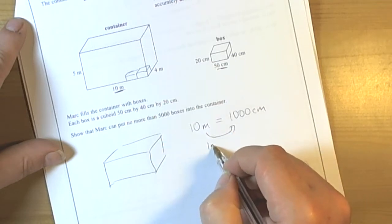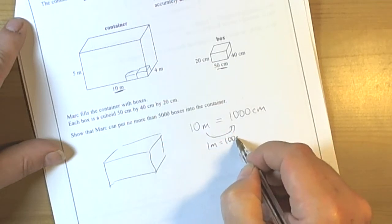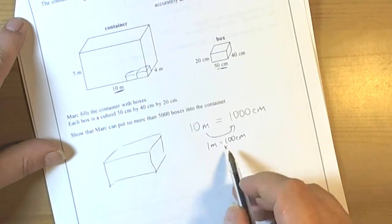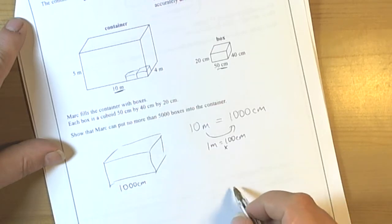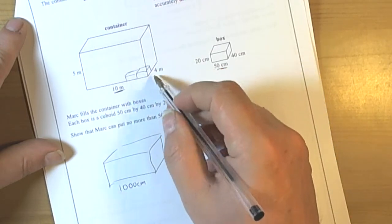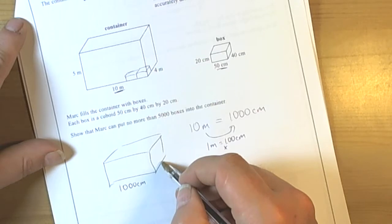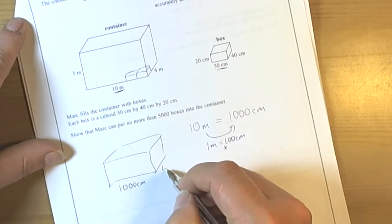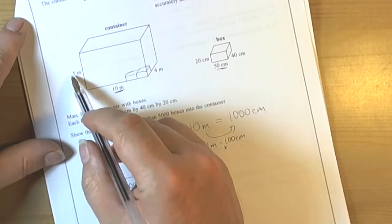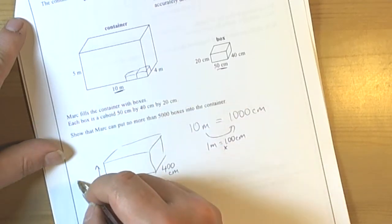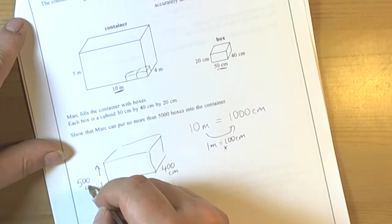The reason we know that is one meter is the same as a hundred centimeters, so we've timesed by one hundred. We do the same for the other dimensions. Four meters was the width, so four times a hundred is four hundred centimeters. And the height was originally five meters, five times a hundred is five hundred centimeters.